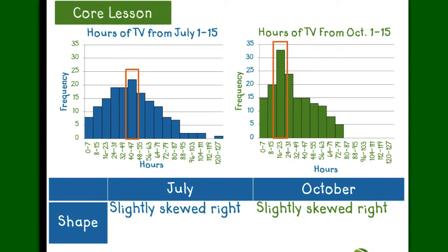In July, most people watched between 40 to 47 hours of television, while in October, the data was at its peak between 16 to 23 hours. This shows us people tend to watch TV longer in July than in October.